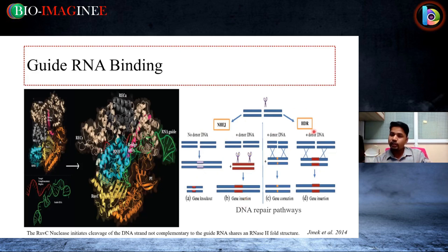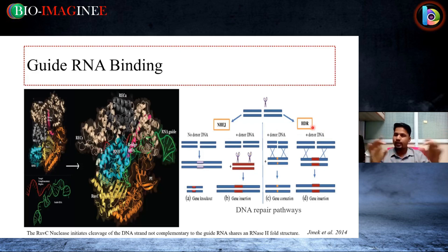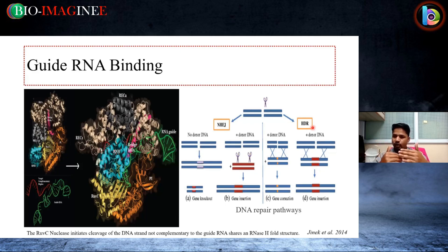In the case of homology-directed repair, which is a regulated phenomenon, donor DNA must be present. If we want gene correction, we can provide that particular template. Or if we want to insert particular DNA, we can also provide the template. For example, if you want to make a 12 base pair deletion, design a 100 base pair nucleotide and create a 12 base pair deletion there. When it binds — and remember it will be complementary to the target DNA sequence — that 12 base pair deletion will be incorporated.